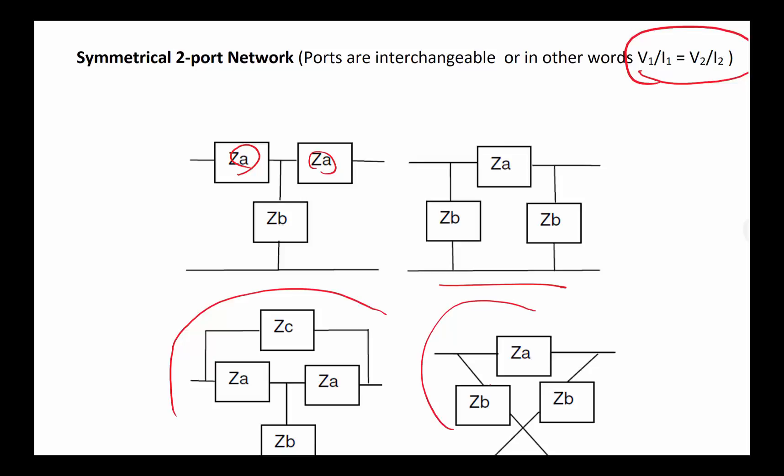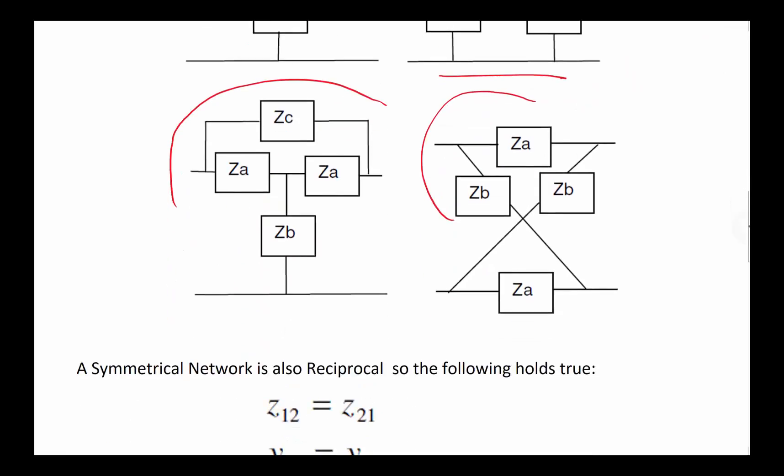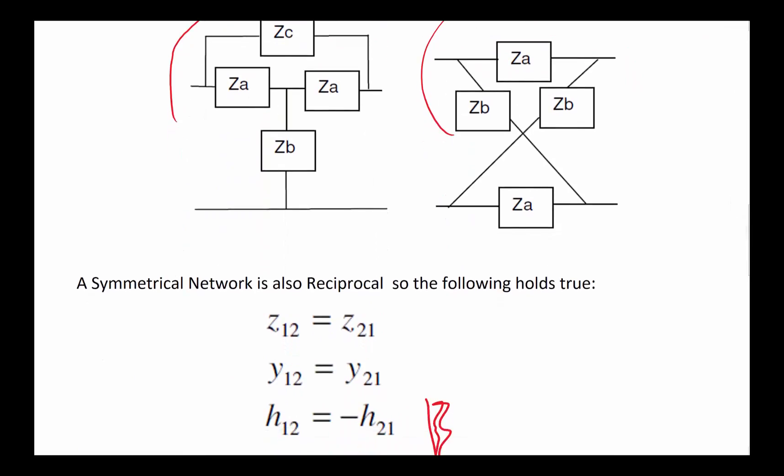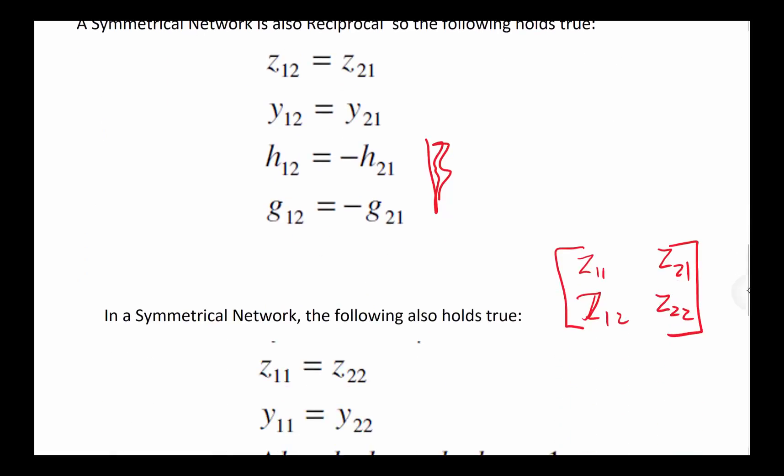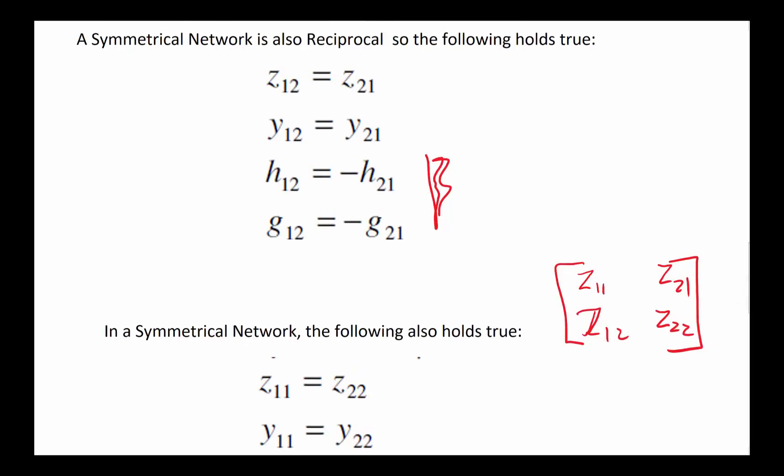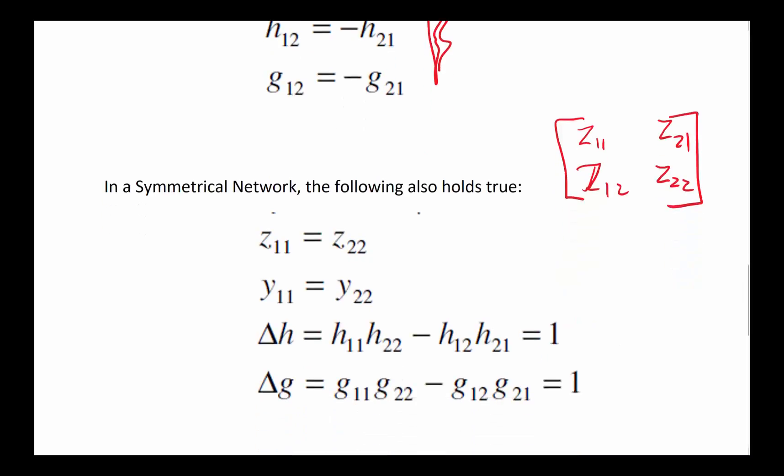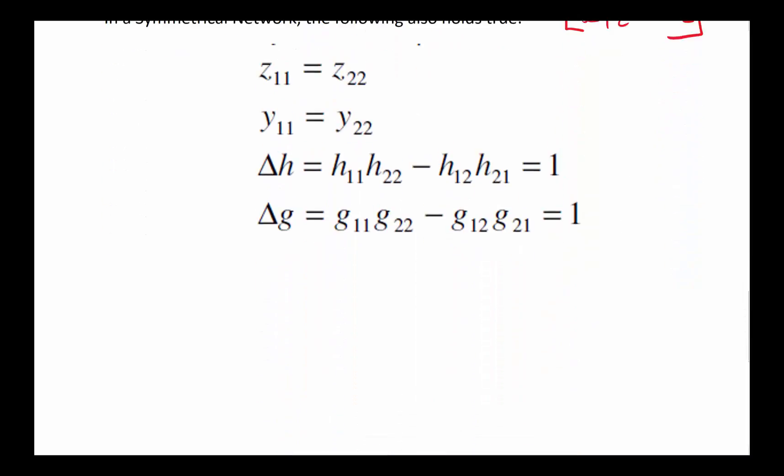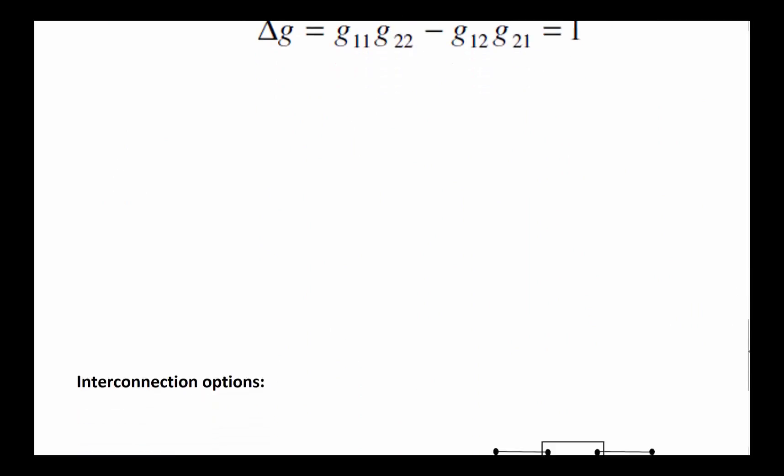Another potential configuration would be the one shown here, and another potential configuration is shown there. So there are a few different ones that we could potentially look at. As we said before, a symmetric network is already reciprocal so it's going to get all the relationships that existed for reciprocal in addition to its new additional relationships as well.